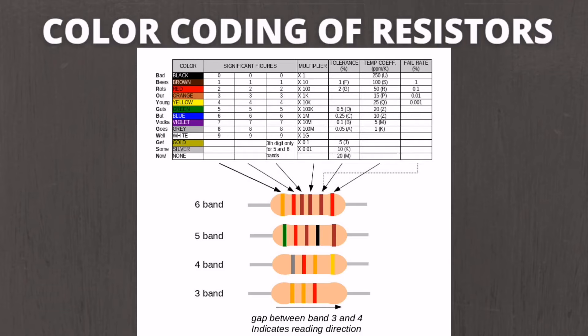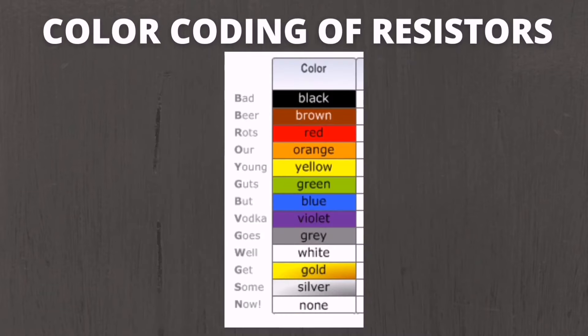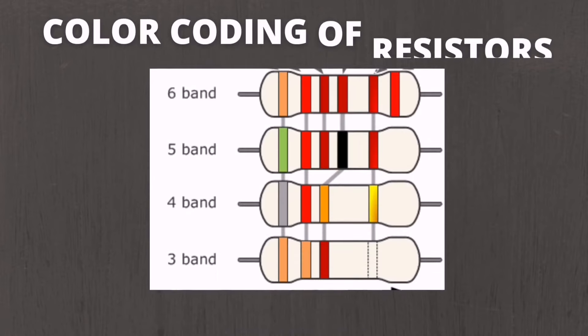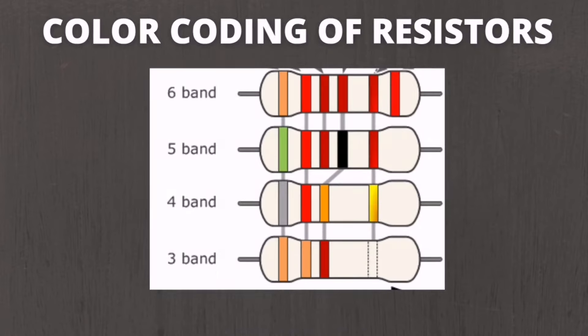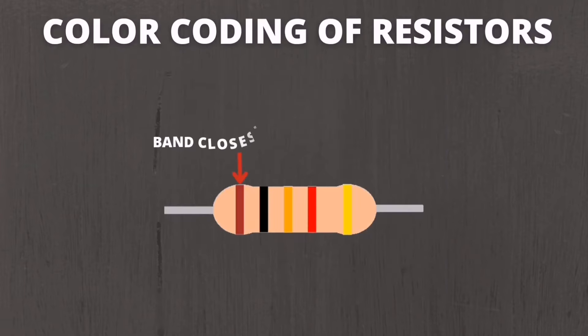To memorize the sequence of color codes of resistors, we use the mnemonic: 'Bad Beer Rats Our Young Gods But Vodka Goes Well Get Some Now.' This mnemonic makes it easier to memorize the color coding. Shown in the image are the four different band types of resistors, from three-band to six-band. When reading the color code, the first band is usually closest to a lead.